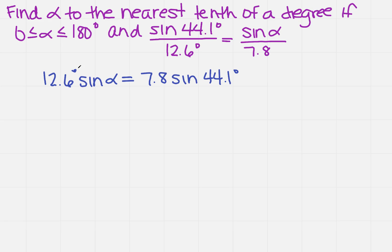That actually didn't do too bad. I've got sine alpha, so I need to get that all by itself. So I'm going to divide both sides by 12.6. And when I do that, then the sine of alpha equals 7.8 sine 44.1 divided by 12.6.